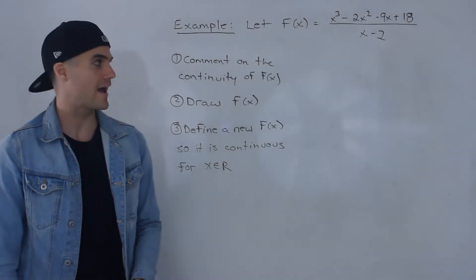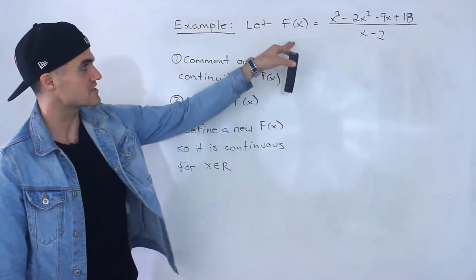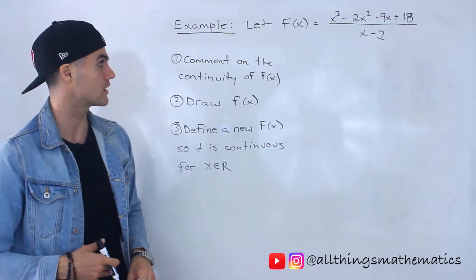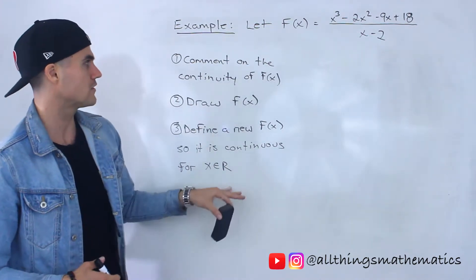Yo, what's up everyone? Patrick here. Welcome back. And in this question, what we're given is this function x to the power of 3 minus 2x squared minus 9x plus 18 all over x minus 2. Got to go through these three questions here.